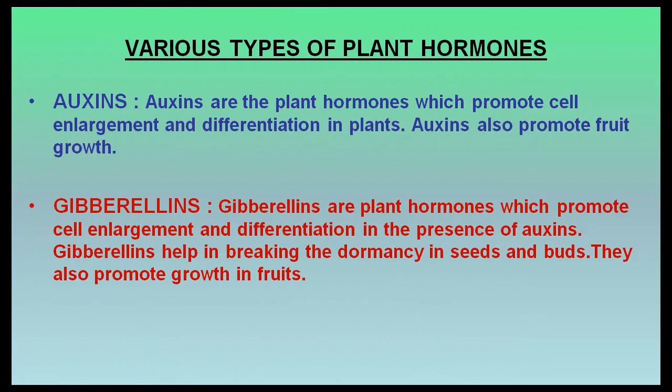The various types of plant hormones include auxins. Auxins are plant hormones which promote cell enlargement and differentiation in plants. Auxins also promote fruit growth.